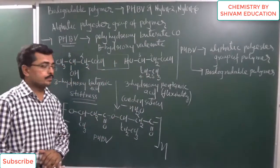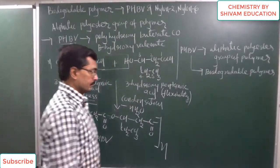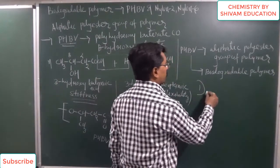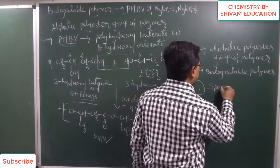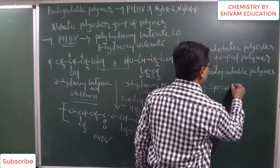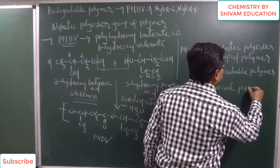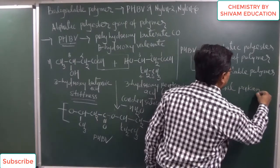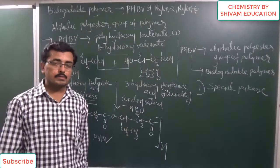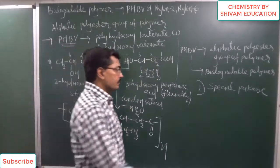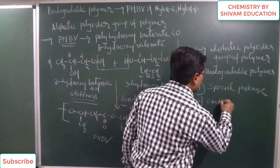PHBV can be used for a variety of purposes. First, it is used as a special packaging material — for different types of special packaging materials it can be used. Second, it is used to prepare different orthopedic devices.